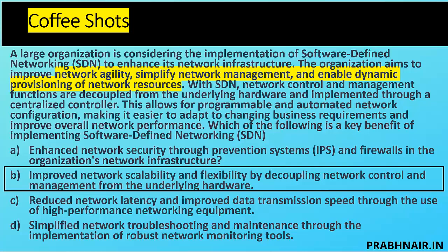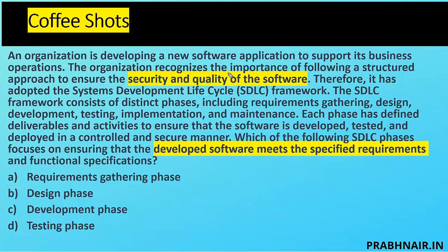Next question on SDLC: an organization is developing a new software application and has adopted an SDLC framework with distinct phases — requirement gathering, design, testing, implementation, and maintenance. Each phase defines deliverables and activities to ensure software is developed, tested, and deployed in a controlled and secure manner. The question asks which SDLC phase focuses on ensuring the developed software meets the specified requirements. Note the past tense — the application is already developed, so we need to verify whether it meets requirements.